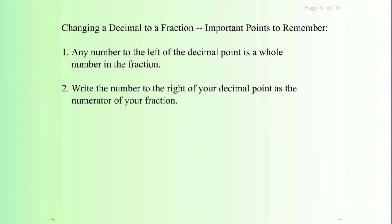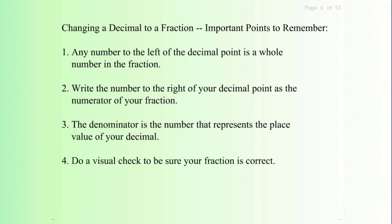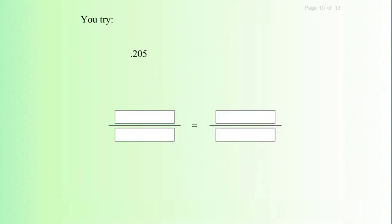Two: write the number to the right of your decimal point as the numerator of your fraction. Three: the denominator is the number that represents the place value of your decimal. Four: do a visual check to be sure your fraction is correct. Five: reduce if possible. Now you try it: point two zero five (.205).